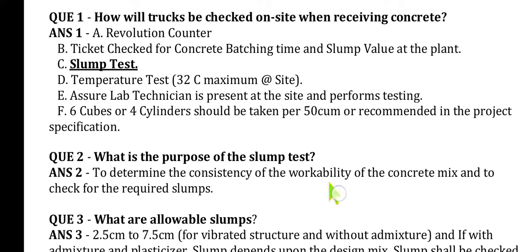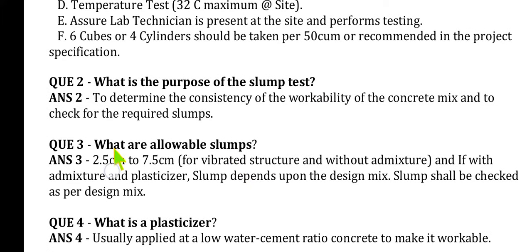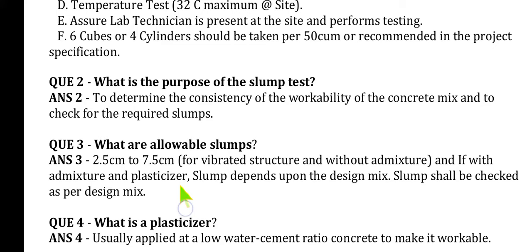Question 2: What is the purpose of slump tests? The answer is to determine the consistency and workability of the concrete mix and to check for the required slump. Question 3: What are allowable slumps? The answer is 2.5 cm to 7.5 cm for a vibrated structure without admixtures. With admixtures, the slump depends upon the design mix — slump shall be checked as per the design mix.